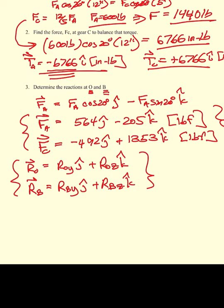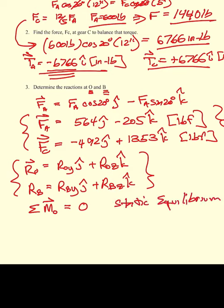Now we take the sum of the moments about O. The reaction force at O will not play a role, so we don't have to worry about it. We set the sum of moments equal to zero because the shaft is in static equilibrium. This allows us to write a moment equation.